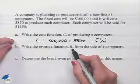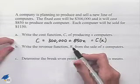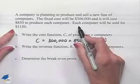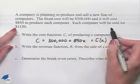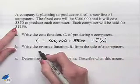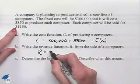The revenue is going to tell us how much money the company will bring in as they sell a computer. That's given to us in the last sentence: each computer will be sold for $1,150.